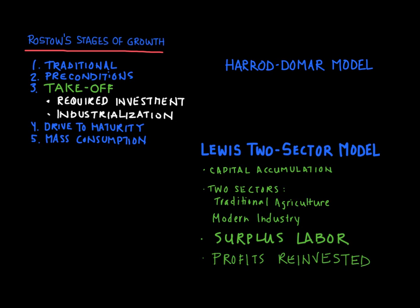Before the Lewis Two-Sector model, a lot of people believed in the Rostow stages of growth model. The Rostow stages were five of them. First, there was a traditional stage, which was based on subsistence agriculture. Then there was a preconditions to takeoff. Then we had a takeoff stage, and this is the most important thing. Rostow says that you have to invest in order to grow, and he tried to explain the move from traditional agriculture to modern industry. The last two stages were a drive to maturity as well as mass consumption.